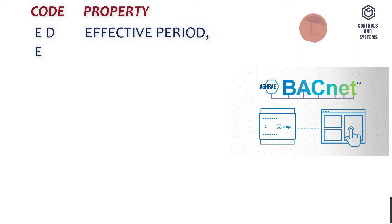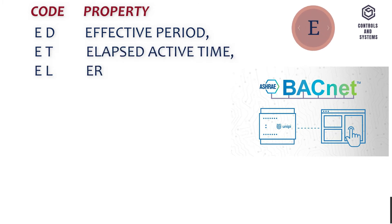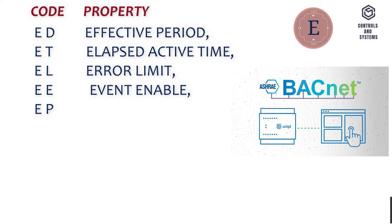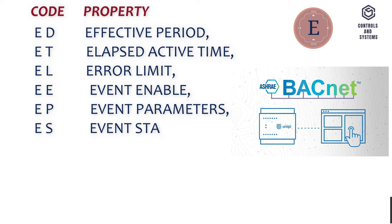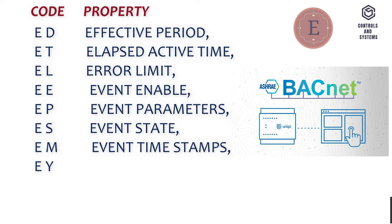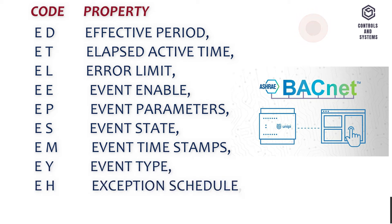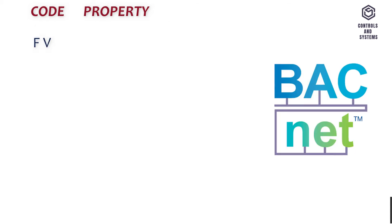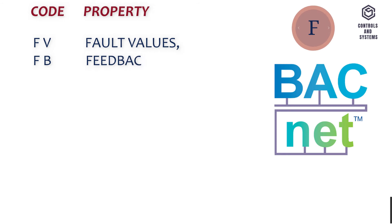C-E-T - Effective Period, C-E-L - Elapsed Active Time, C-E-E - Error Limit, C-E-P - Event Enable, C-E-S - Event Parameters, C-E-M - Event State, C-E-Y - Event Time Stamps, C-E-H - Event Type, C-F-V - Exception Schedule, C-F-B - Fault Values, C-F-M - Feedback Value.